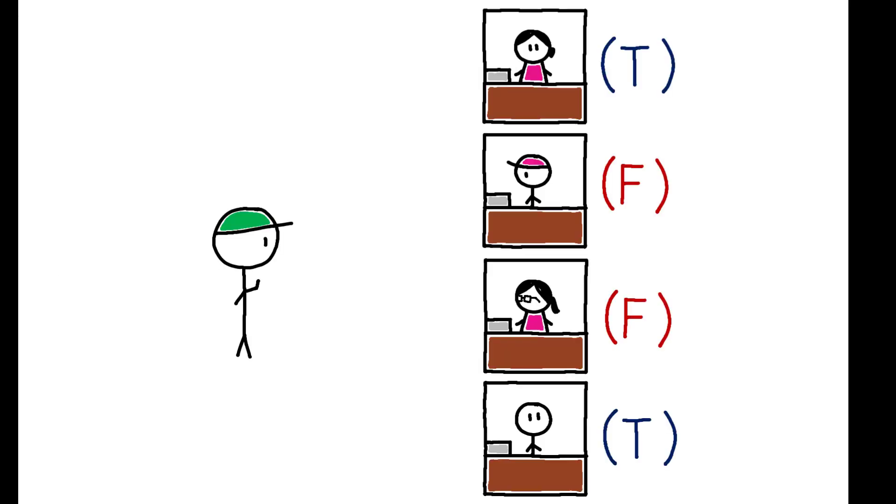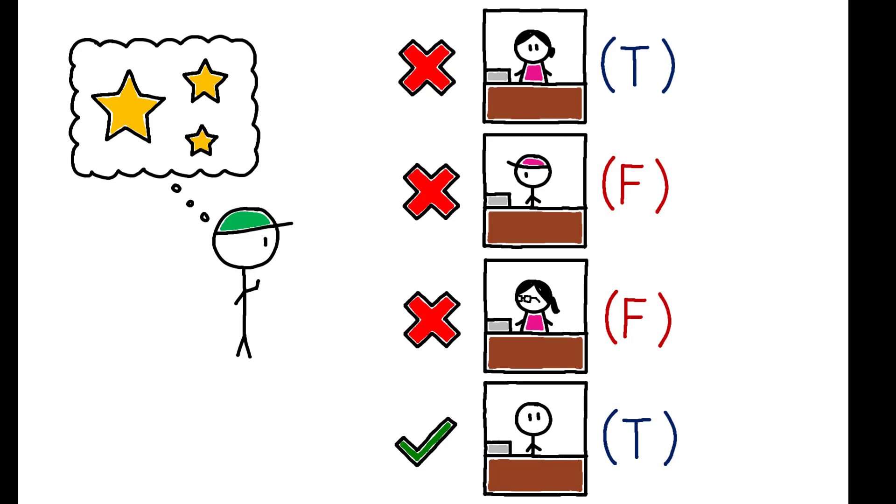Thus, individuals are bad at detecting lies, yet are overconfident in their ability to do so. What are the implications for how lies spread?